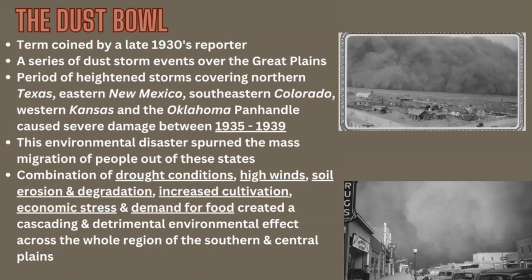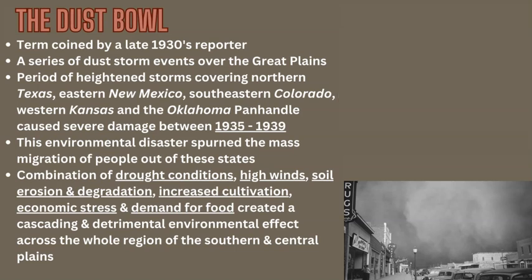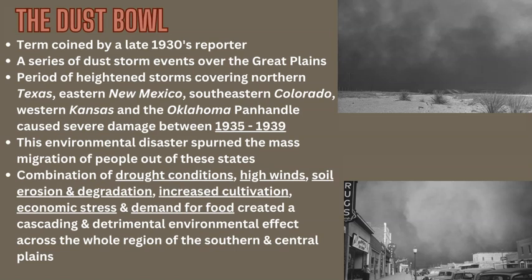Homes, farms, and possessions were covered by dust, causing mass migration out of affected areas to states like California or back east. These migrants were termed 'Okies,' referencing Oklahoma, though they came from multiple states. The human migration story is compelling, though the focus of this channel is the environmental science behind the event.